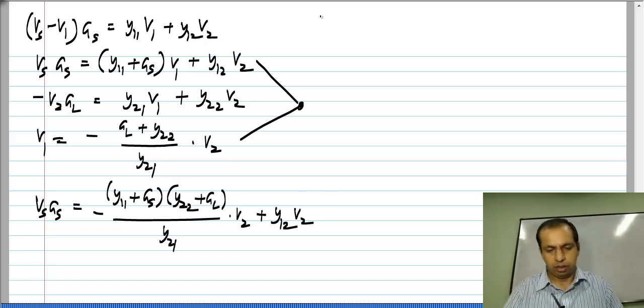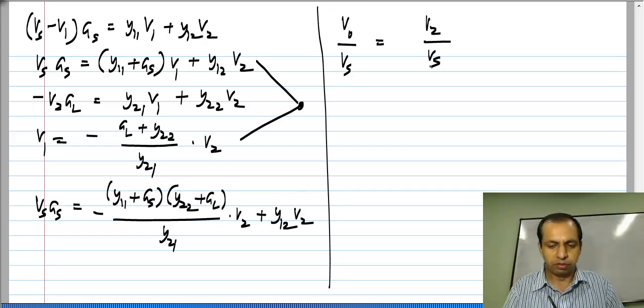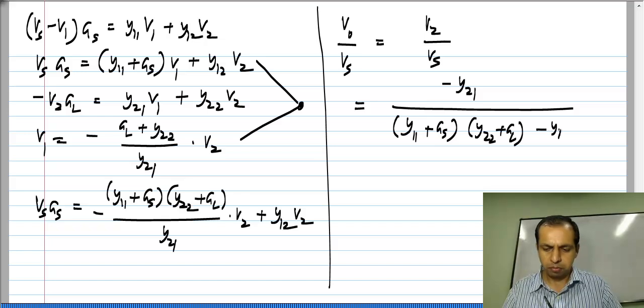Now by manipulating this I can get V naught by V s which is the same as V 2 by V s to be minus Y 2 1 divided by Y 1 1 plus G s Y 2 2 plus G l minus Y 1 2 Y 2 1.